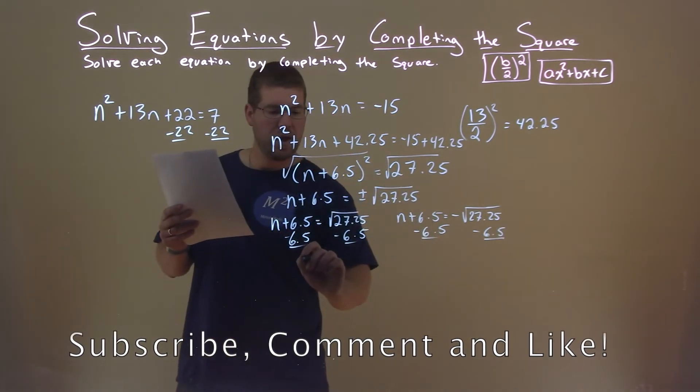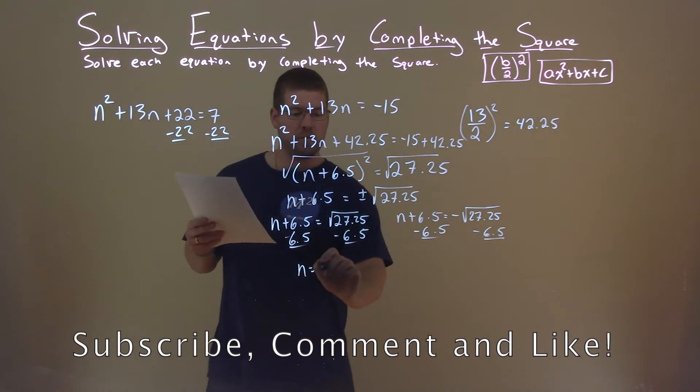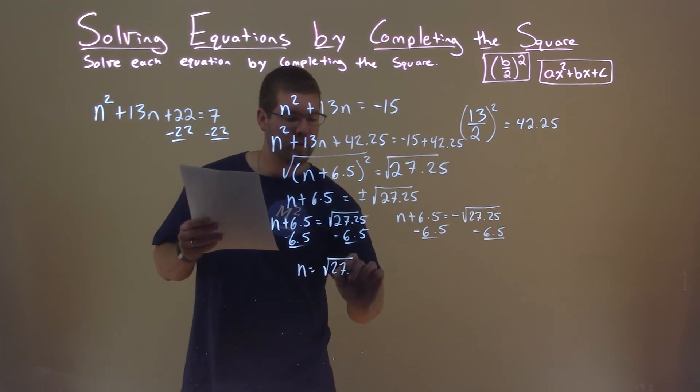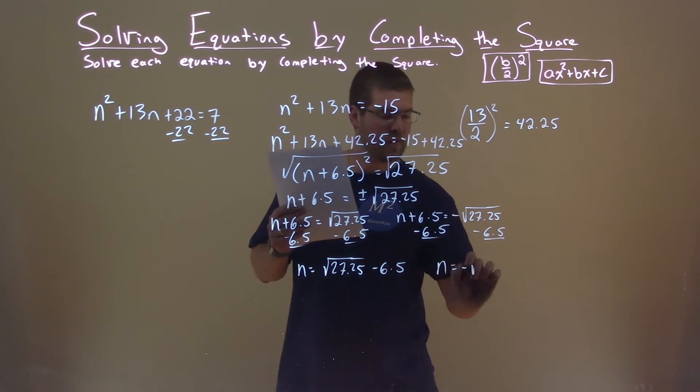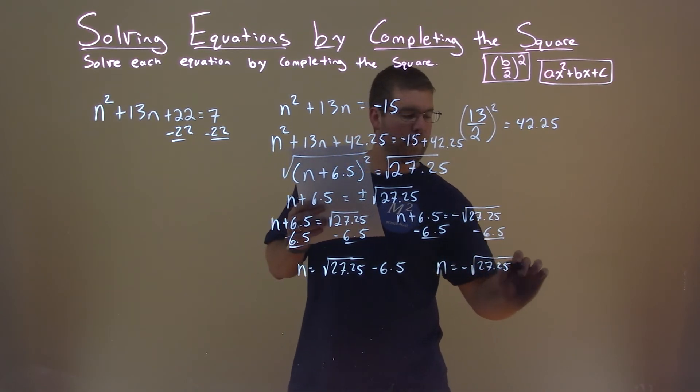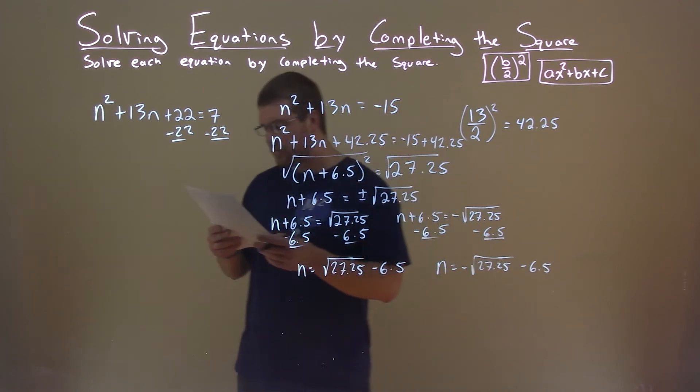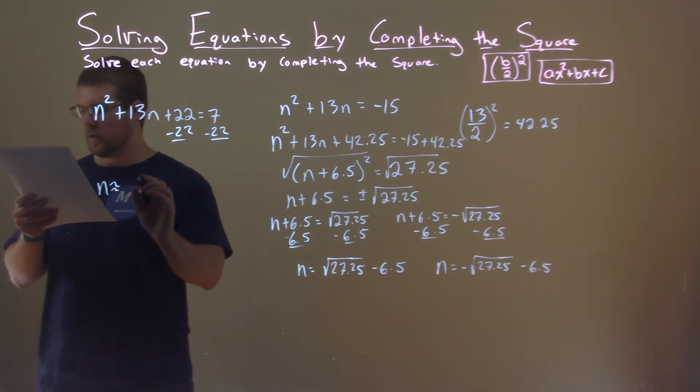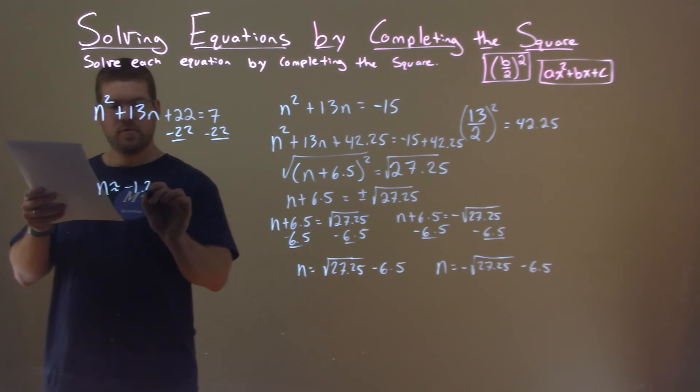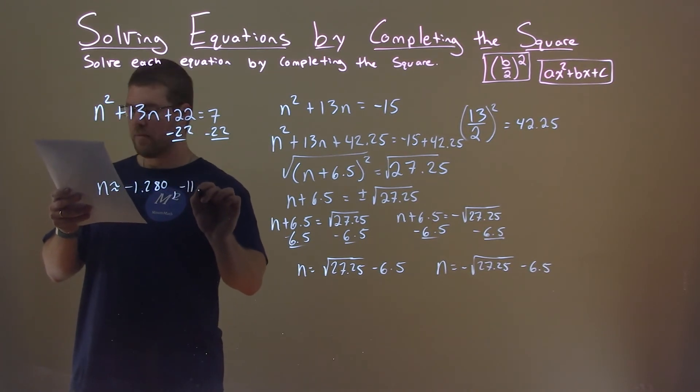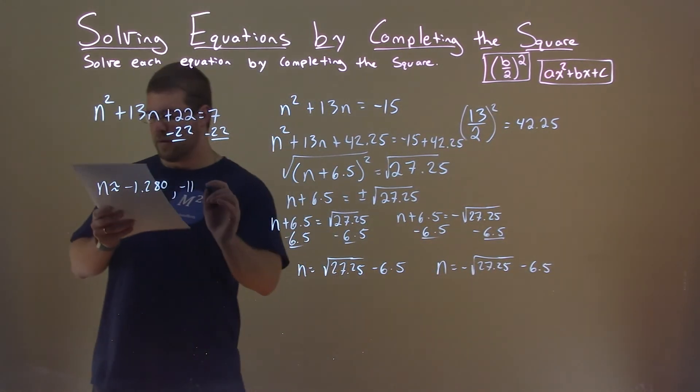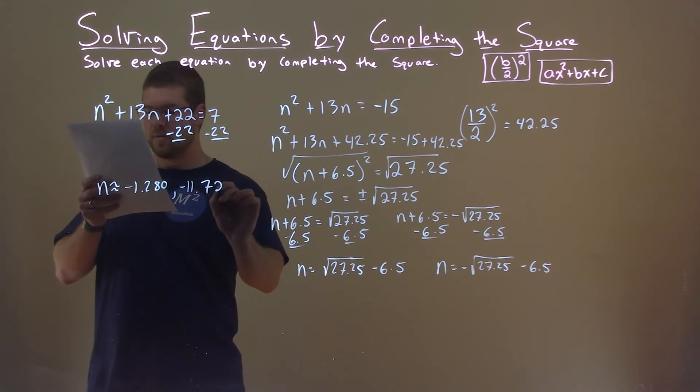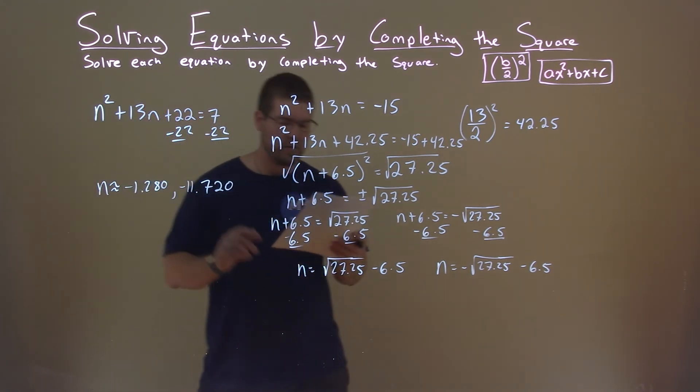n equals the square root of 27.25 minus 6.5, and n equals negative square root of 27.25 minus 6.5. Those two decimals are approximately negative 1.280 rounded, and negative 11.720. And those two are our final answer.